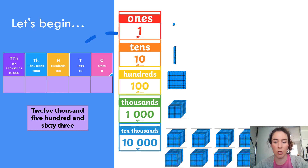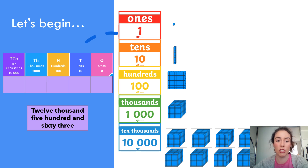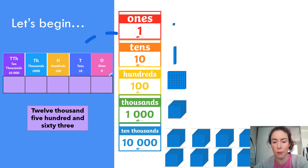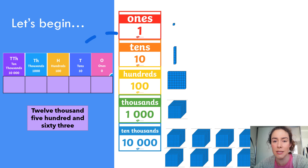Let's unpack our place value and whole number learning a bit more. Underneath the place value descriptions I've got a table where I'm going to write in my number, which is written in words here. But before we do that, let's have a visual reminder of some of the resources we would use in the classroom for place value.